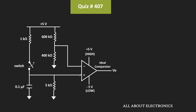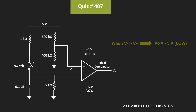As you know, depending on the voltage at the input terminals, the output of the comparator will be either high or low. If the voltage at the positive terminal is more than the negative terminal, then the output will be high. On the other hand, if the voltage at the inverting terminal is more than the voltage at the non-inverting terminal, then the output will be low.